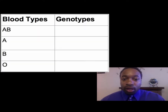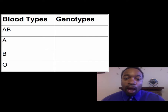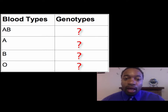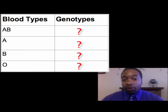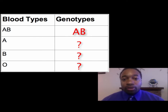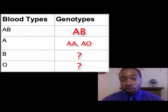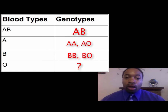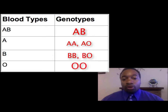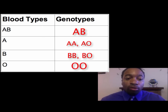So you can write the genotypes for the four blood types in different ways. AB blood type has only one genotype: AB. Blood type A can be written two ways: homozygous AA, or AO, since O is recessive. The same is true for blood type B: homozygous BB, or BO. And for blood type O, since it's recessive, the genotype is OO.